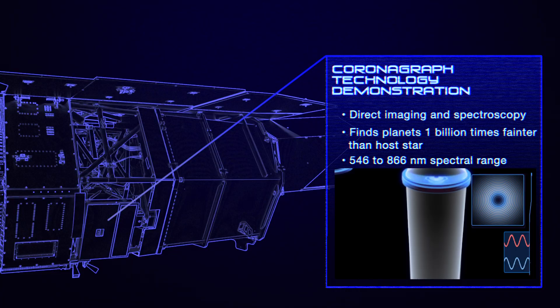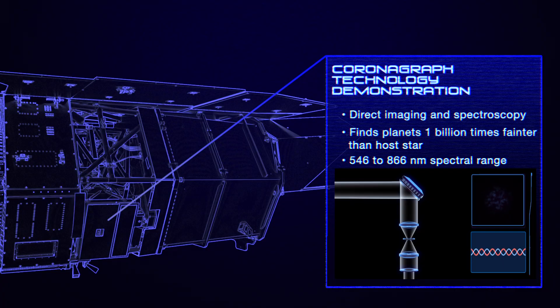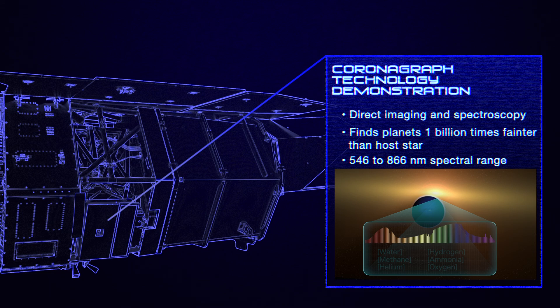This method will enable Roman to capture direct images of distant planets, and even analyze the light that is reflected off their surfaces, allowing scientists to learn about their composition and atmospheres.